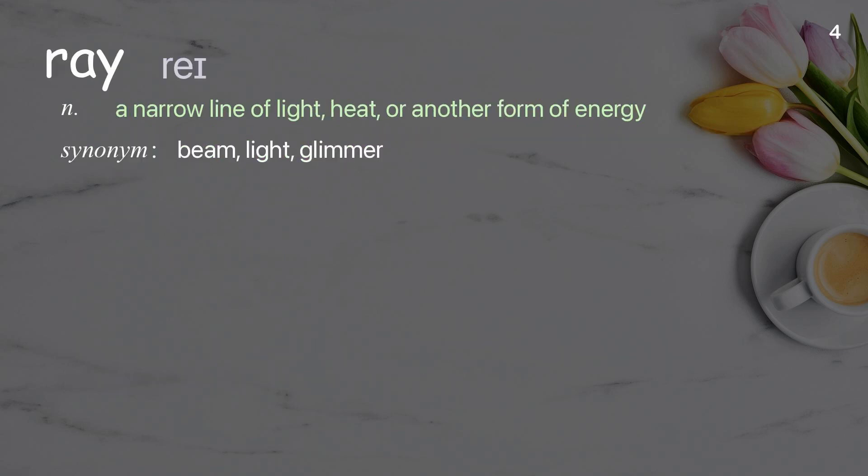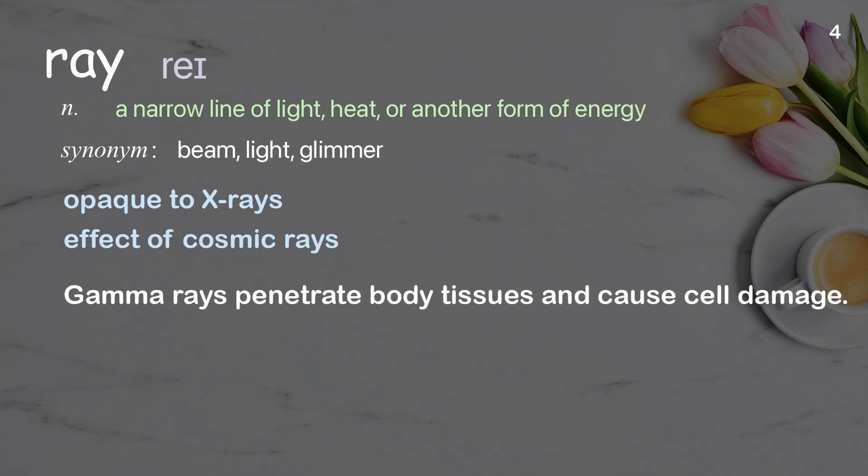Ray: a narrow line of light, heat, or another form of energy. Examples: opaque to X-rays, effect of cosmic rays. Gamma rays penetrate body tissues and cause cell damage.